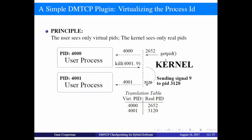Here's a very simple example using virtual process IDs. The secret is: never let the end user find out their real process ID. Every time they ask anything about a process ID, give them our virtual process ID. These processes think they're talking to processes number 4000 and 4001. We interpose in our library in the middle — whenever they try to talk to the kernel, we translate back and forth. The real process IDs are 2652 and 3120. On restart, those will be different. We just update the translation table and let the user process continue executing. You can extend that principle to network addresses and so on.